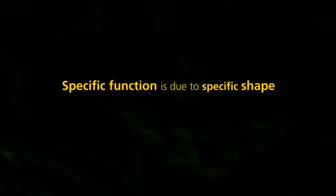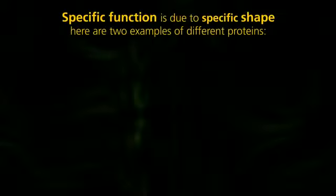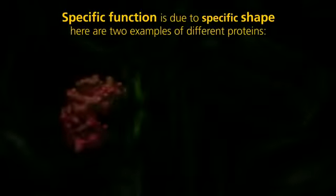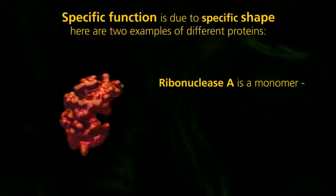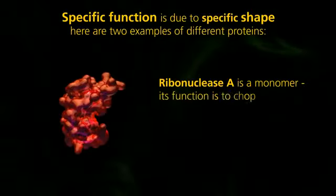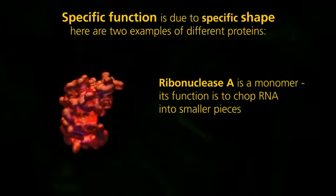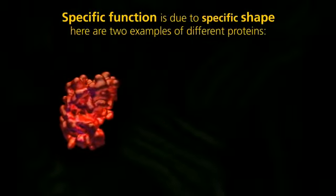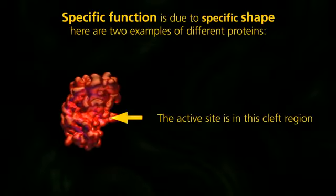Specific function is due to specific shape. Here are two examples. Ribonuclease A is a monomer. Its function is to chop RNA into smaller pieces. The active site is in this cleft region.